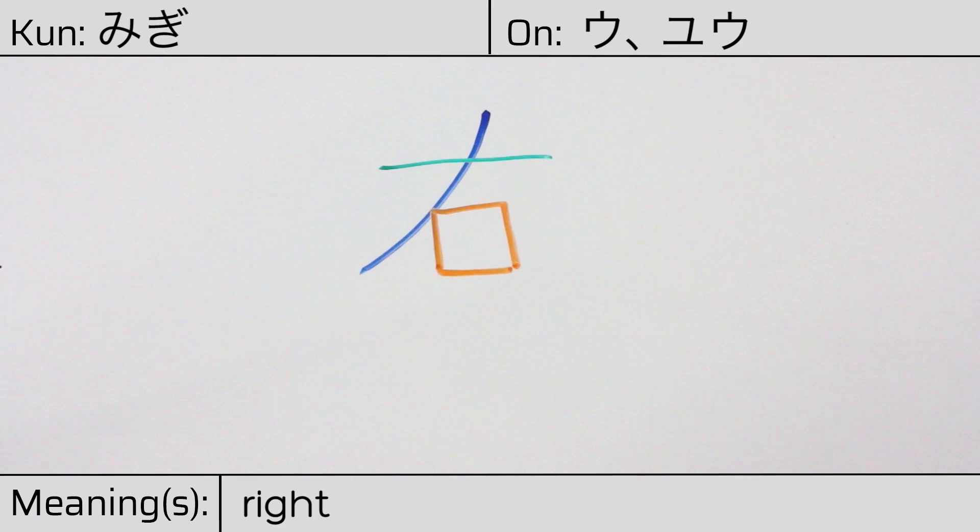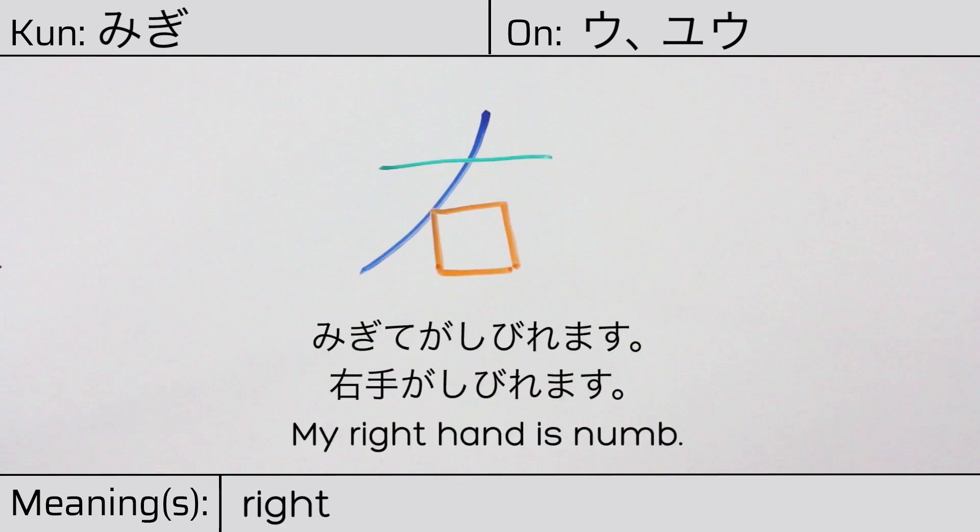Our example sentence is Migi te ga shibiremasu. My right hand is numb.